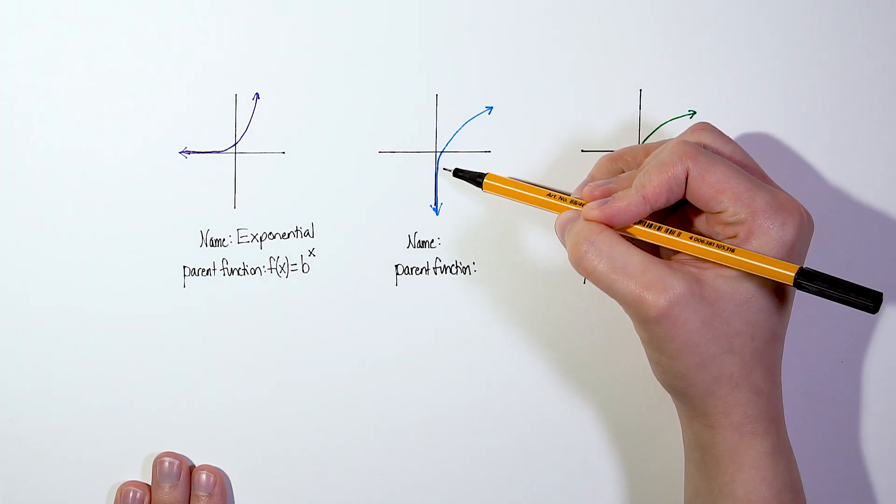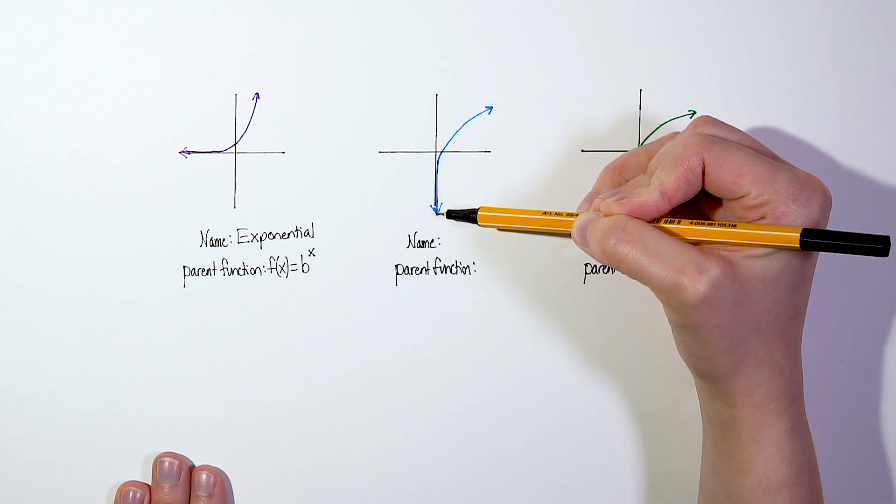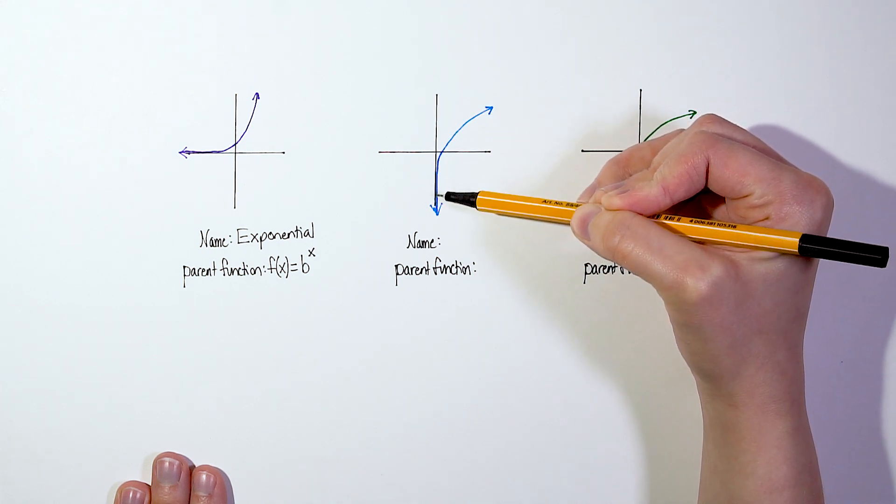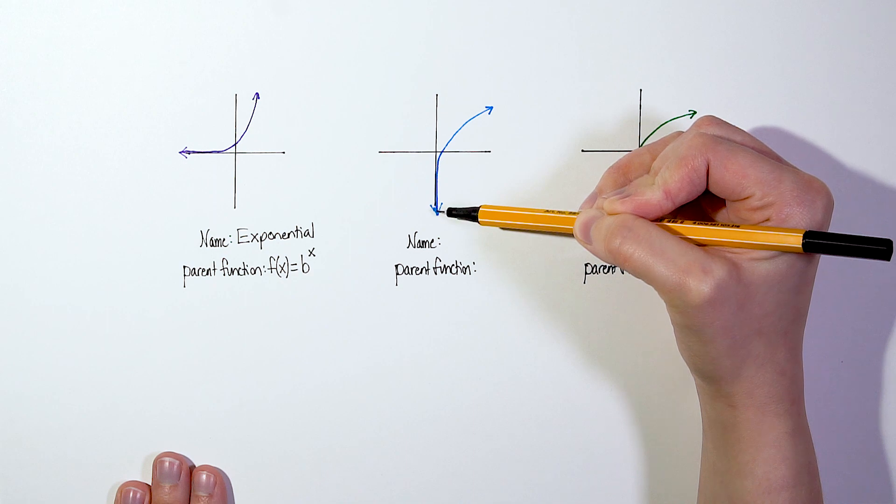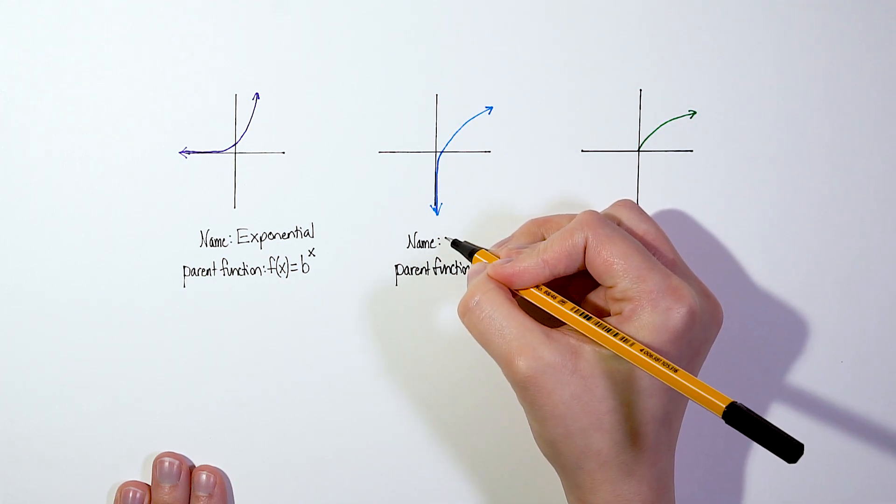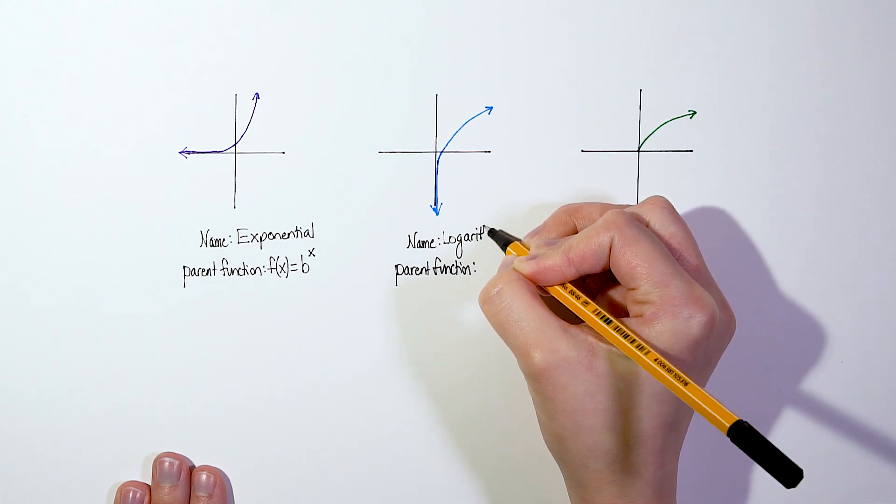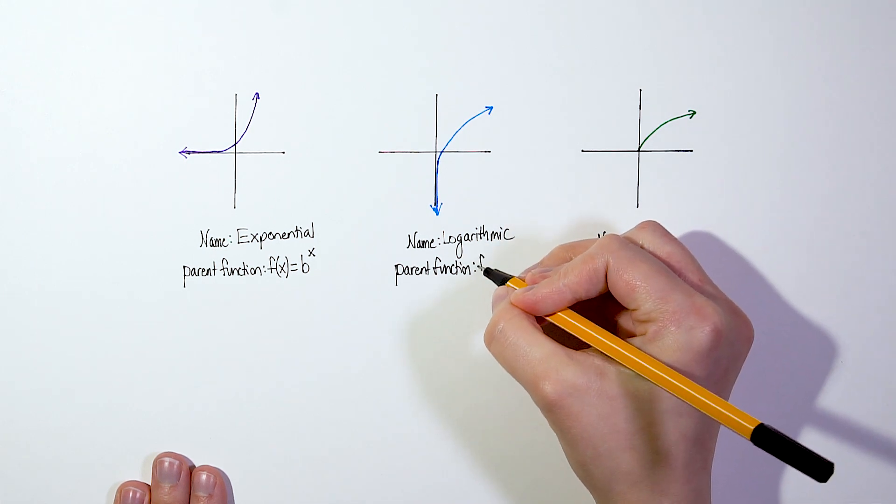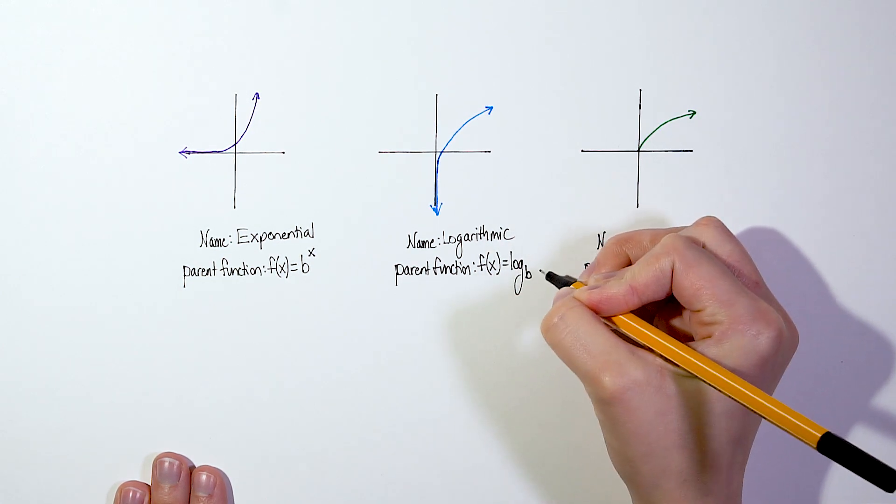Next, when we look at this blue graph, notice that this one has a vertical asymptote line. So this asymptote falls, it's a vertical line that falls at x = 0, is where that line falls, that asymptote line. When we have just a vertical asymptote, this one is actually called a logarithmic function. And the parent function of a logarithmic function would be f(x) = log base b of x.